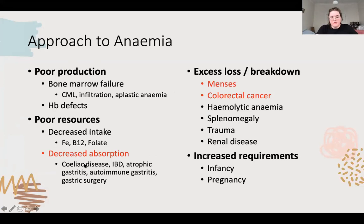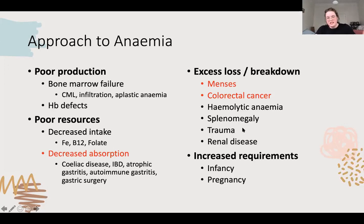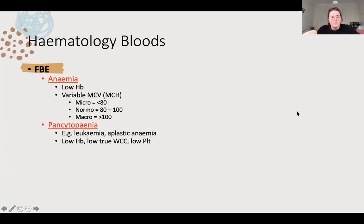Excess loss or breakdown: colorectal cancer is the big thing you really don't want to miss, presenting with iron deficiency anaemia from chronic blood loss. Menstruation in young females. Increased requirements comes up in women's health and paeds next year. In terms of important bloods: FBE - you need to recognise an anaemia and work out what type it is, but also check that it's not a pancytopenia.